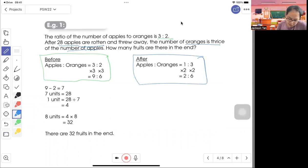So this is the ratio. Next step is to make the orange the same. Orange is 2, here the orange is 3. The common multiple is 6. Times 3 get 9 to 6. Here times 2 get 2 to 6.